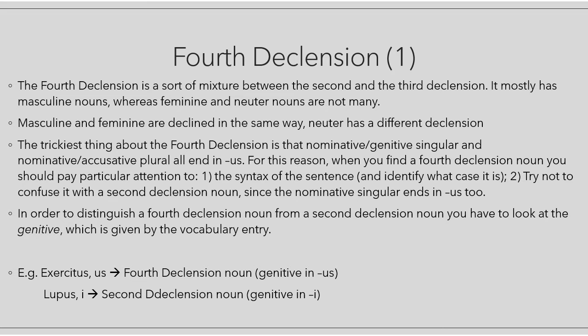So how do we distinguish them? In order to distinguish a fourth declension noun from a second declension noun, you have to look at the genitive singular, which is given by the vocabulary entry. For example, 'exercitus, exercitus' is a fourth declension noun because the genitive singular ends in 'us'. The second word is 'lupus, lupi', so the genitive singular ends in 'i', and it can only be a second declension noun.